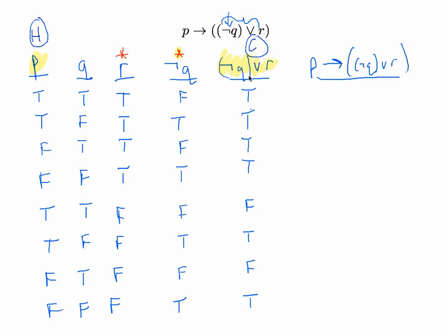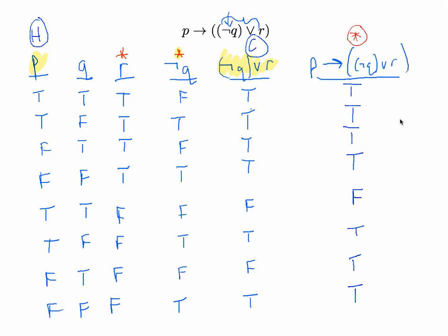Looking at those two columns: true hypothesis and true conclusion gives a true conditional; true and true again gives true. In the third and fourth rows the hypothesis is false, so the entire conditional statement is true. In the fifth row I have a true hypothesis and a false conclusion — that's where we get false. In the sixth row, true hypothesis and true conclusion gives true. In the last two rows the hypothesis is false, so the conditional statement is true.